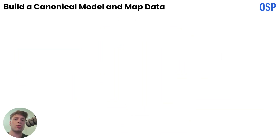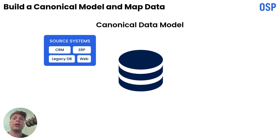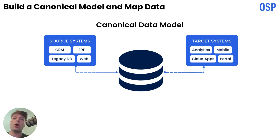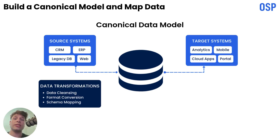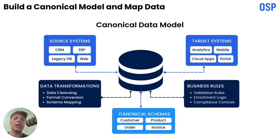Even with FHIR, every EHR works differently. The same lab might be coded differently, or vitals could use different units. That's why you need a canonical data model — a single internal schema your app uses. Map each vendor's FHIR fields to that model, normalize code systems: LOINC for labs, RxNorm for meds, SNOMED or ICD for diagnoses. Use a terminology service if you can, and log mapping decisions so your team can maintain them later. Patient matching is part of mapping too — decide how you'll handle multiple identifiers, duplicates, and merges. Get this right early; identity problems cascade into every downstream feature.